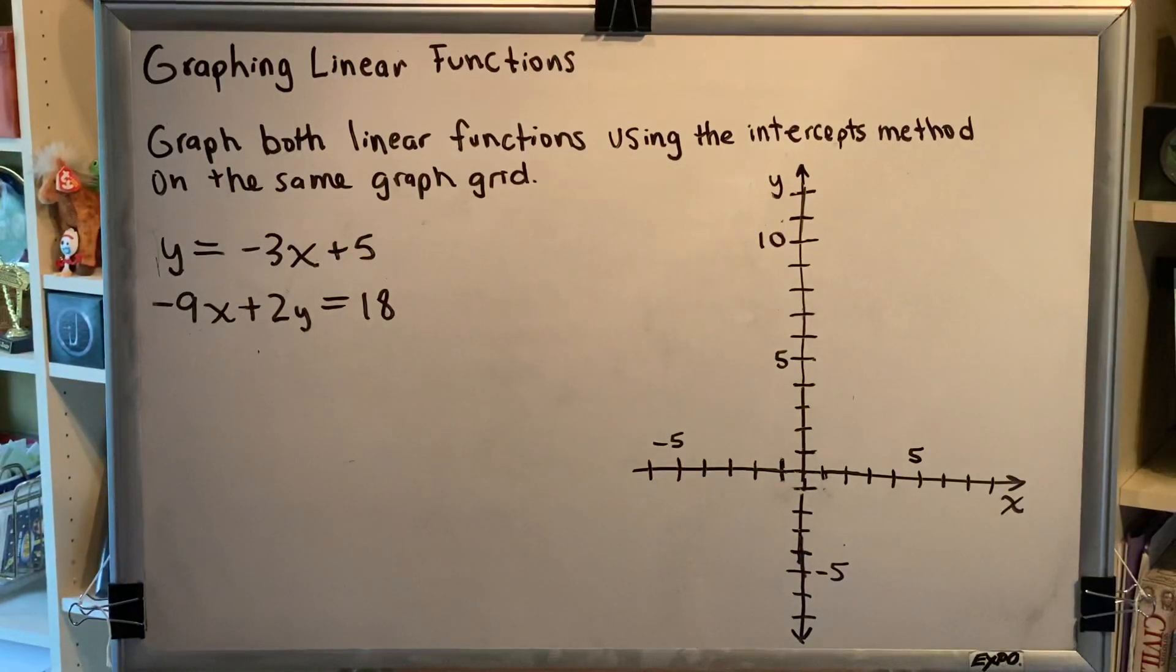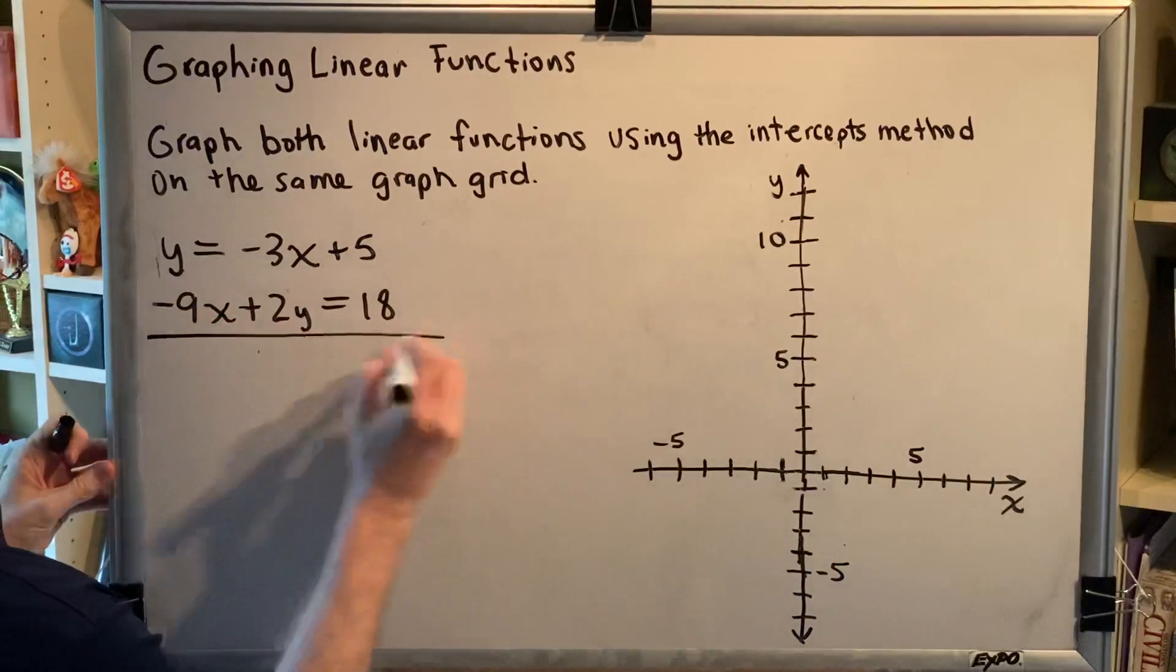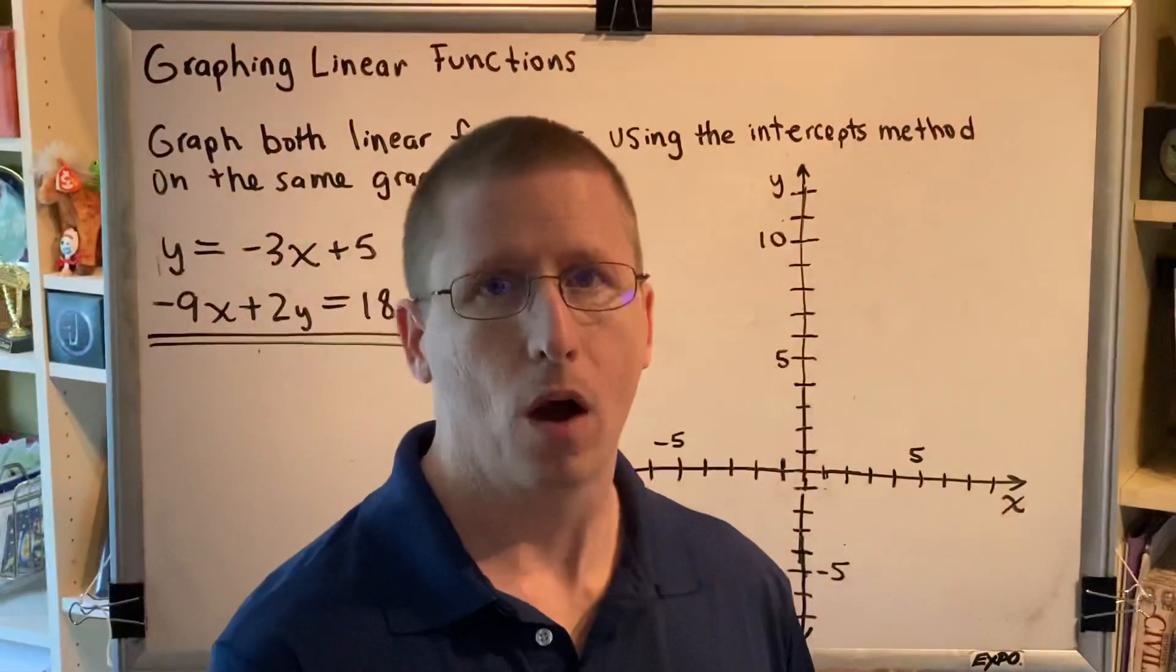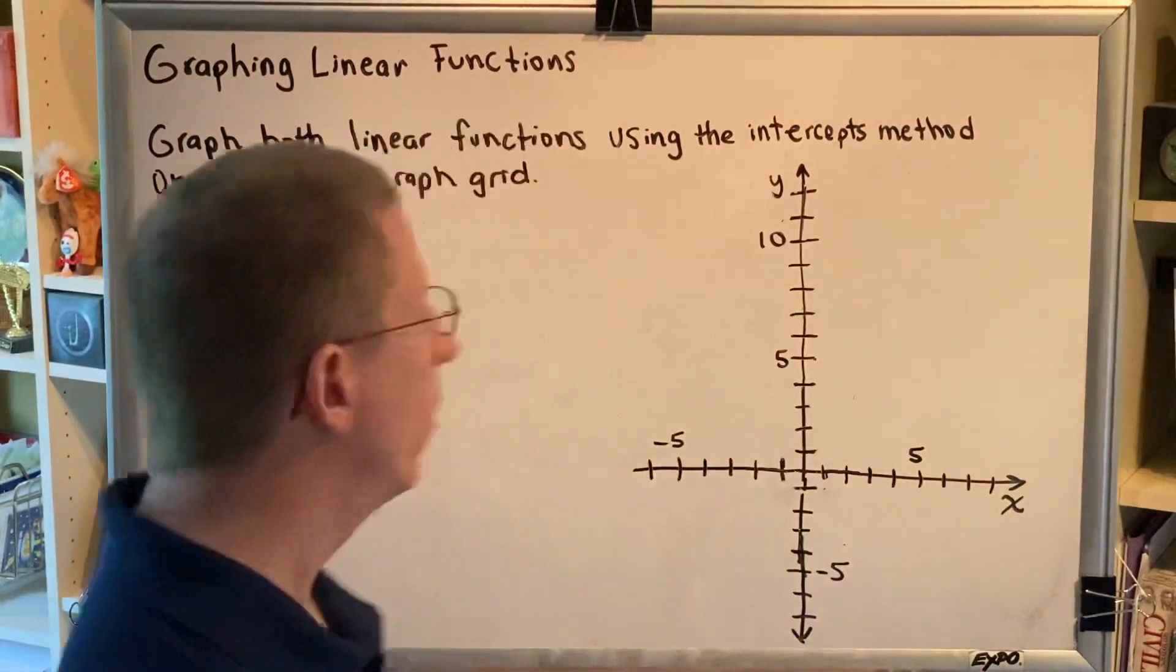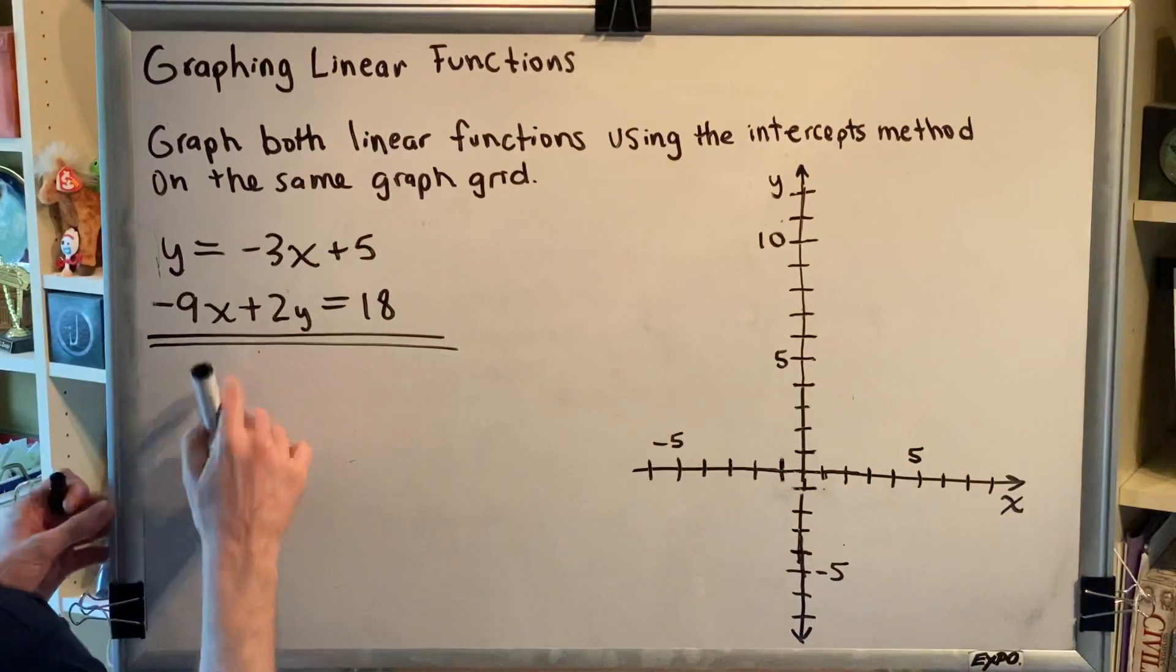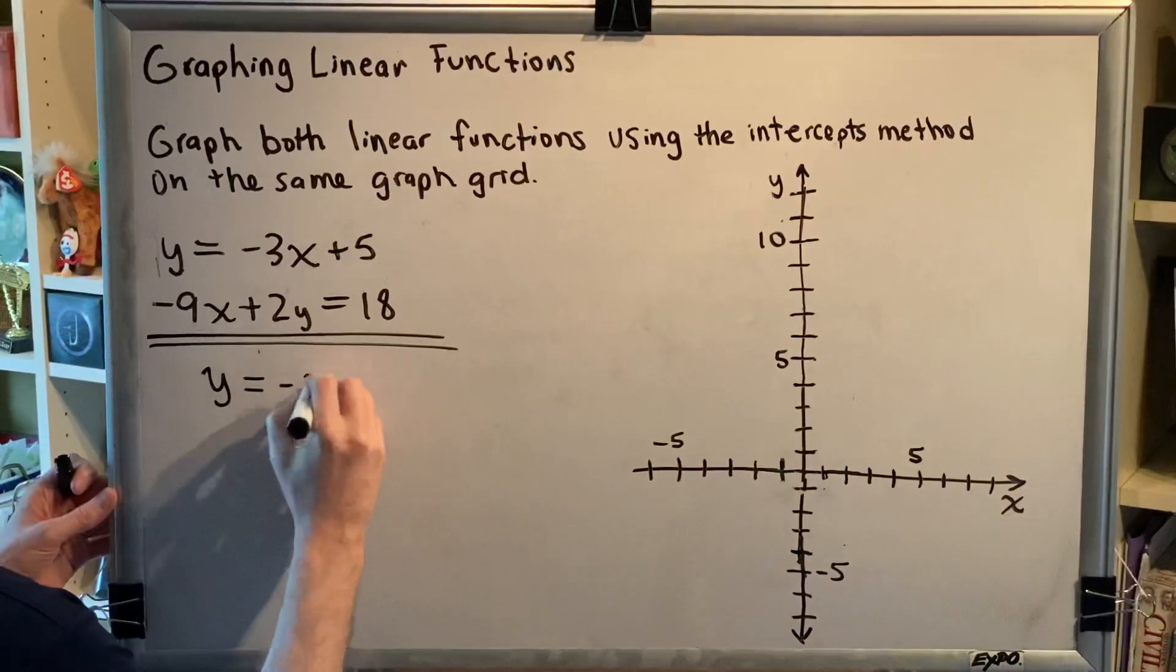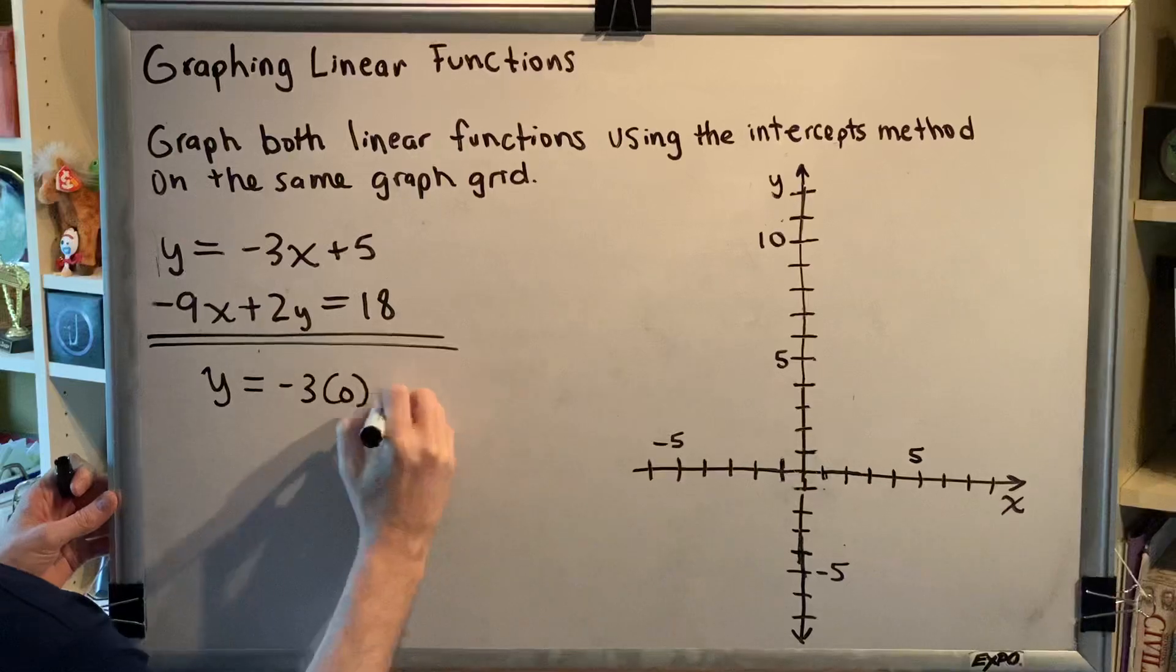The intercepts method works for lines, and the way it works is very simple. An intercept is a coordinate that has a zero in it somewhere, either the x is zero or the y is zero or both. One way to graph a line very quickly and easily is to assume that one of your variables has the value zero and then solve for the value of the other.